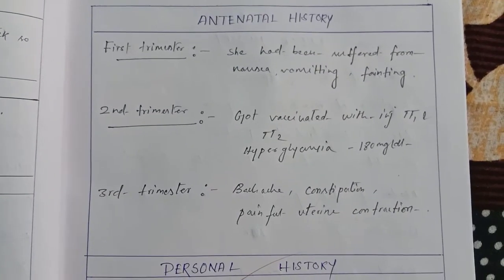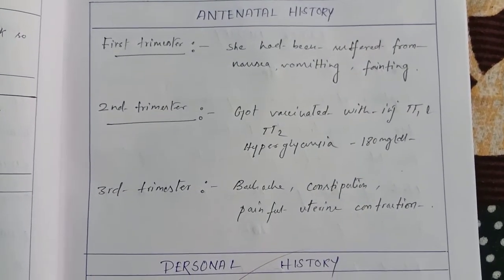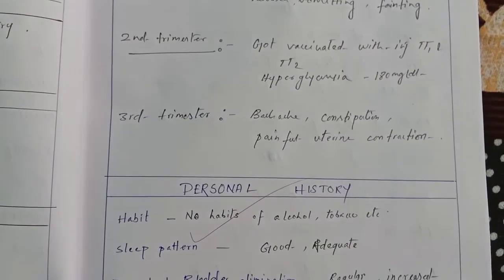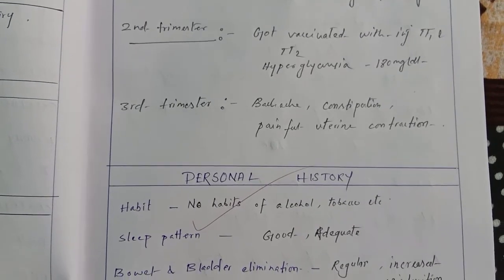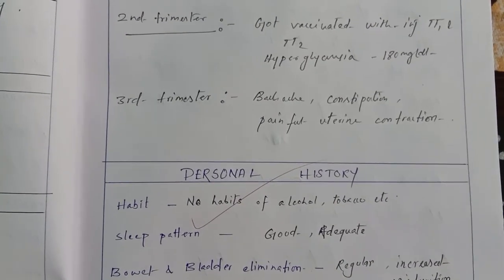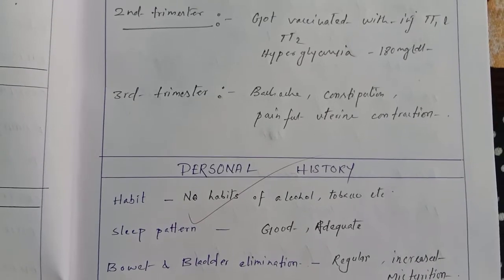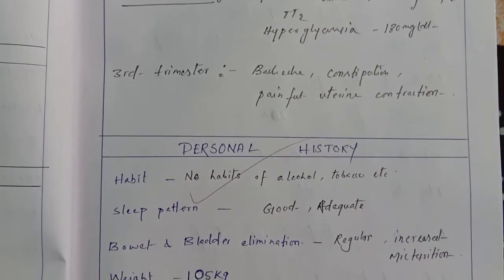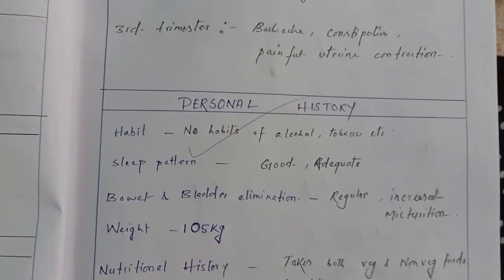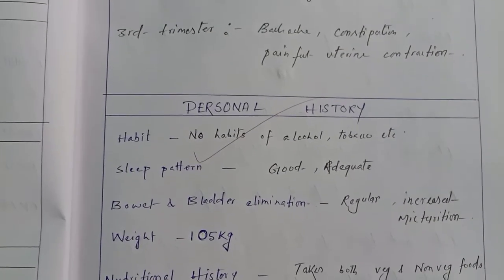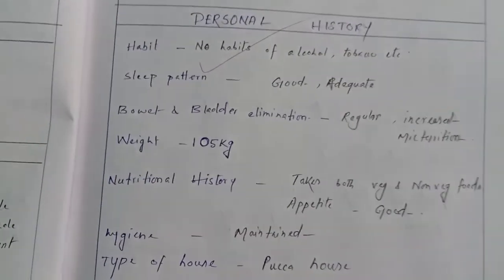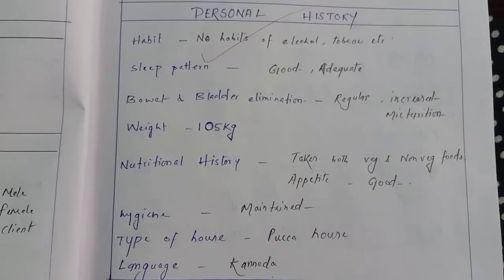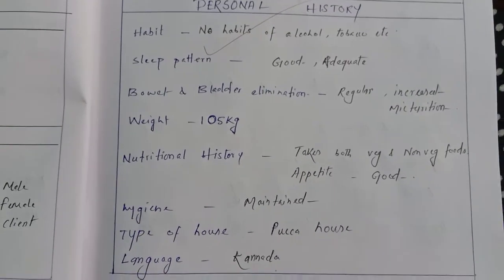Antenatal history: first trimester she suffered from nausea and vomiting. Second trimester she was vaccinated with injection TT1 and TT2, and had hyperglycemia with glucose level of 180 mg/dL. Third trimester: backache, constipation, and painful uterine contractions.